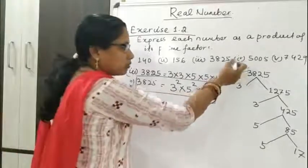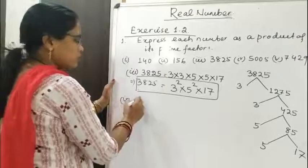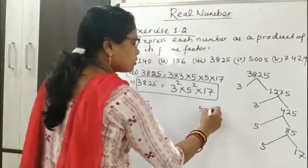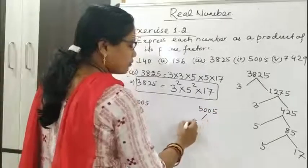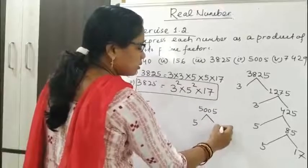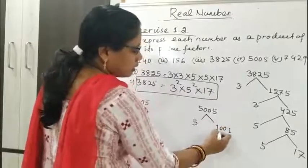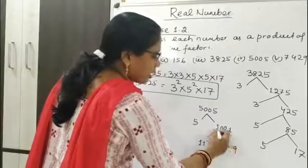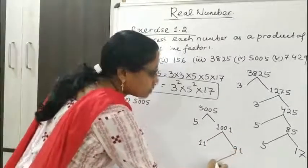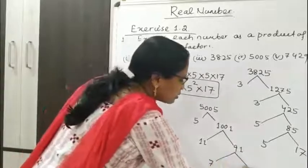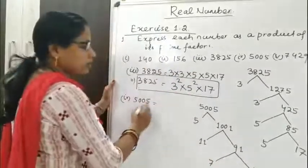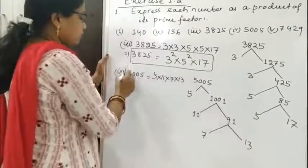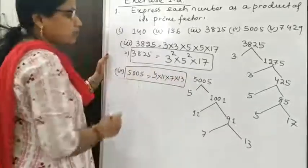Now the fourth number, 5005. 5005 is divisible by 5, giving 1001. Then 1001 is divisible by 11, giving 91. Then 91 is divisible by 7, giving 13. So 5005 = 5 × 11 × 7 × 13. This is the prime factorization of 5005.